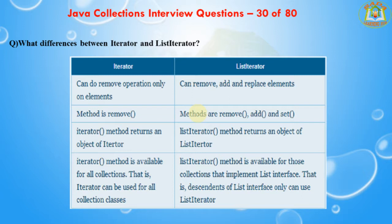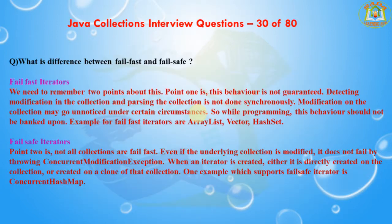The next question is: what is the difference between fail-fast and fail-safe? The fail-safe property works with a clone of the underlying collection and is not affected by modifications in the collection. All collection classes in java.util package are fail-fast, while collection classes in java.util.concurrent are fail-safe. A fail-fast iterator throws a ConcurrentModificationException; a fail-safe iterator never throws such an exception. For fail-fast iterators, note that this behavior is not guaranteed.